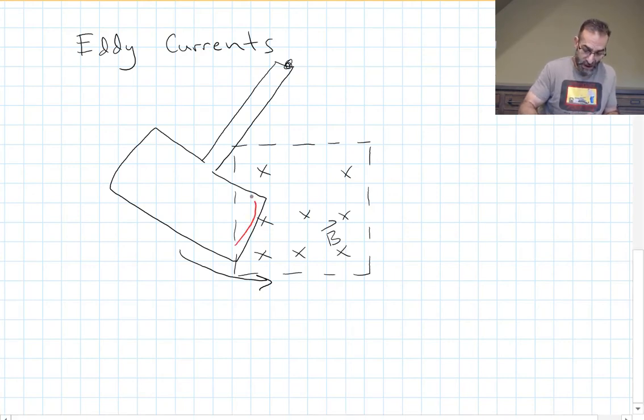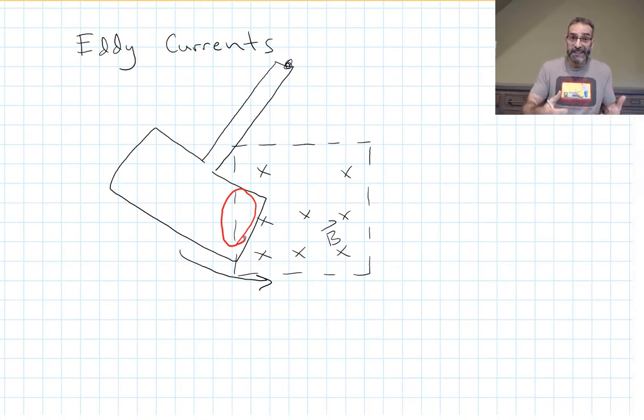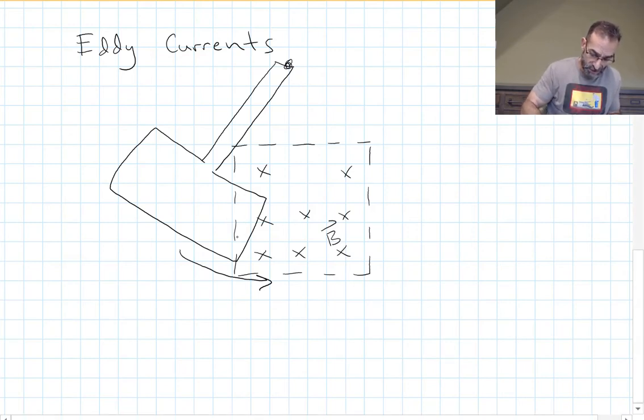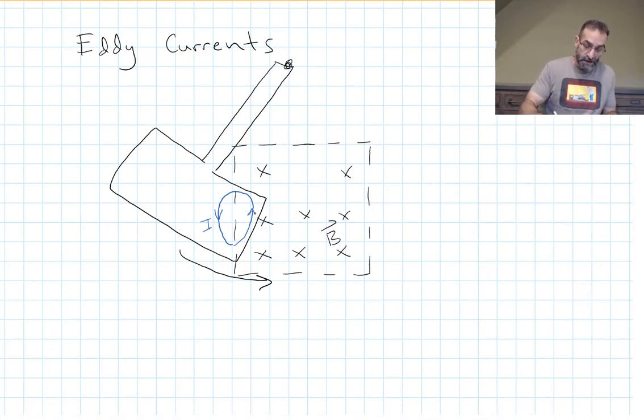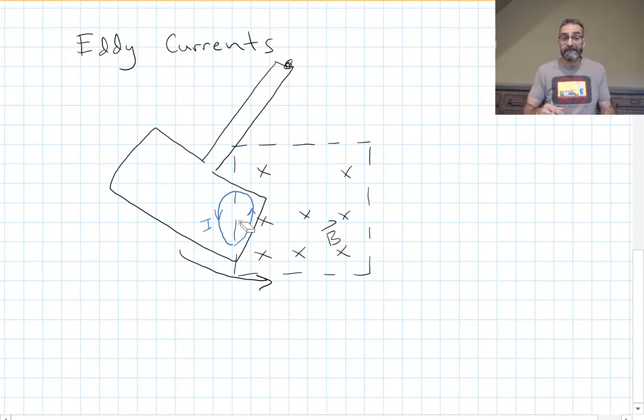So the flux in this part of our conductor is increasing into the page. A conductive material is a solid conductor, but it acts no different than a loop of wire does. We have an increasing flux. A current is going to get set up to try to oppose that change. So we're going to get a current that's set up in this direction. Now we have a current moving toward the top of our page for the most part, right here in this section. And that current is in a magnetic field. It's going to feel a force. What direction is the force on that current? To the left.